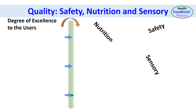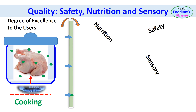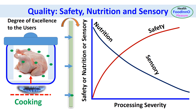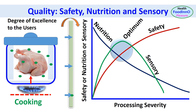For example, consider the cooking of a chicken. In this graph, we can see that safety increases as processing severity is increased — that is, increased time and temperature. However, the nutrition content decreases as processing severity increases. Sensory quality at the early stage of cooking is similar to raw, and at the later stage the product becomes overcooked. Therefore, in many instances, processing severity needs to be optimized based on multiple quality parameters. This is a simplified example — in reality, it is a complicated problem to solve.